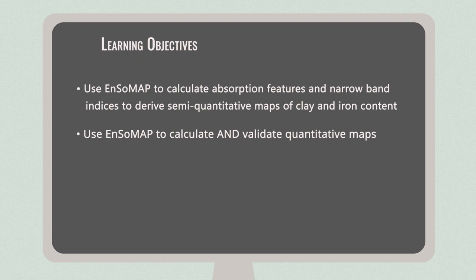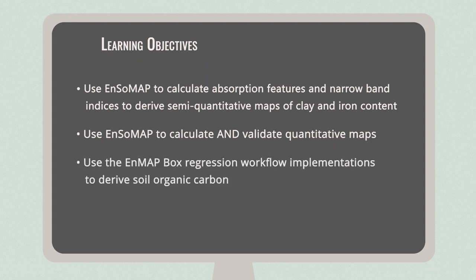We have spared no effort, and thus I'll also show you how to derive another soil property — soil organic carbon — using a different method, namely partial least squares and random forest regressions in an agricultural area in northern Germany. Again, using our versatile NMAP box.